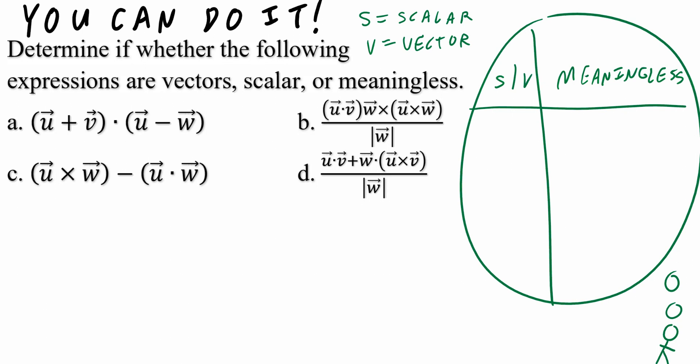Case number one: if you take some scalar outcome and multiply it with another scalar outcome, this gives you a scalar outcome — for example, five times seven equals 35. Case number two: if you take a scalar and multiply it with a vector outcome, this gives you a vector outcome — for example, five times vector A is still a vector outcome.